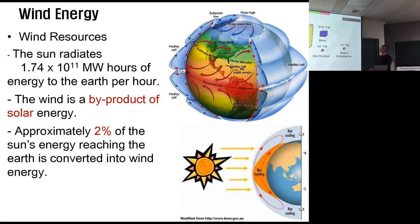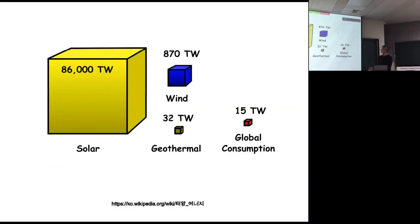Another easier example: solar energy converted into two percent wind energy, and geothermal energy. Global consumption is only 15 trillion watts, so this one is big enough if we can convert this one into consumable energy.